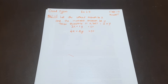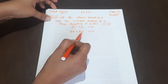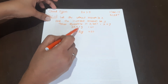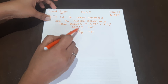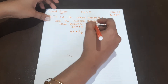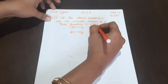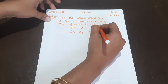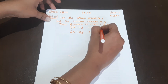We will use the elimination method. We will eliminate 2y. To do this, we will take the entire equation and multiply it by 2.